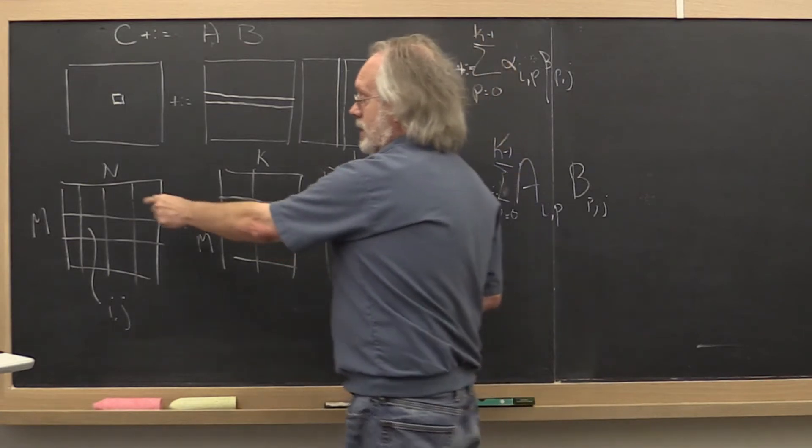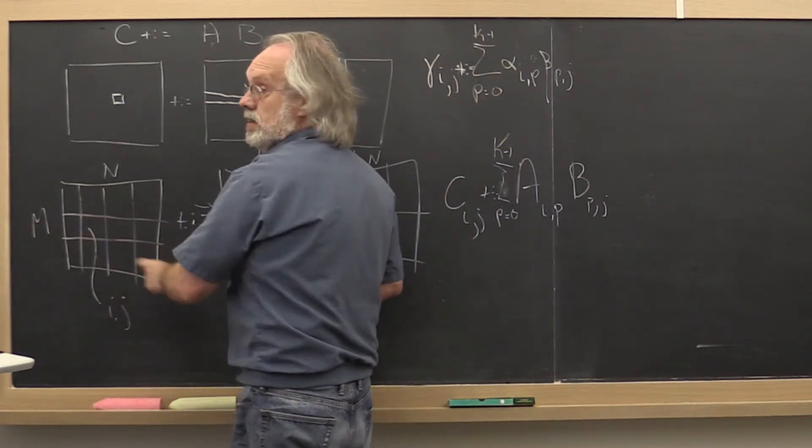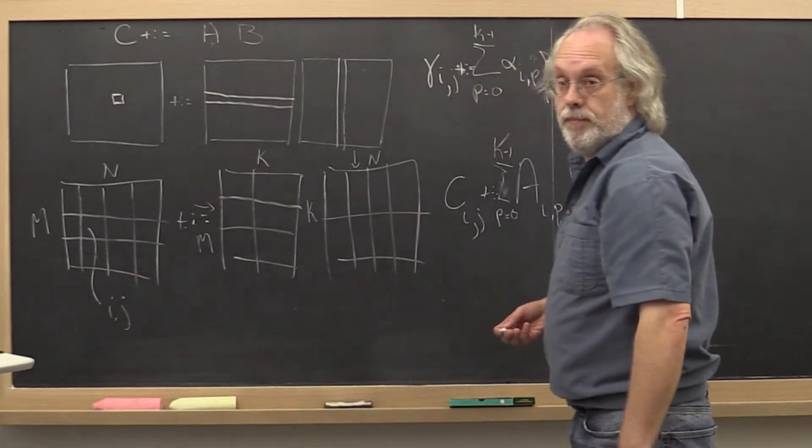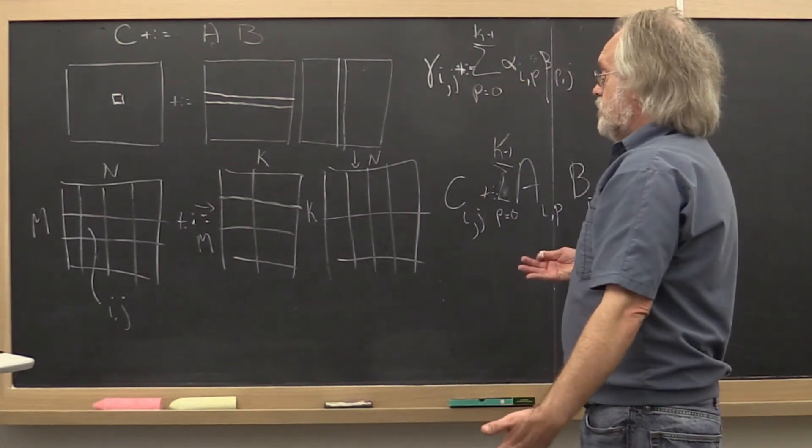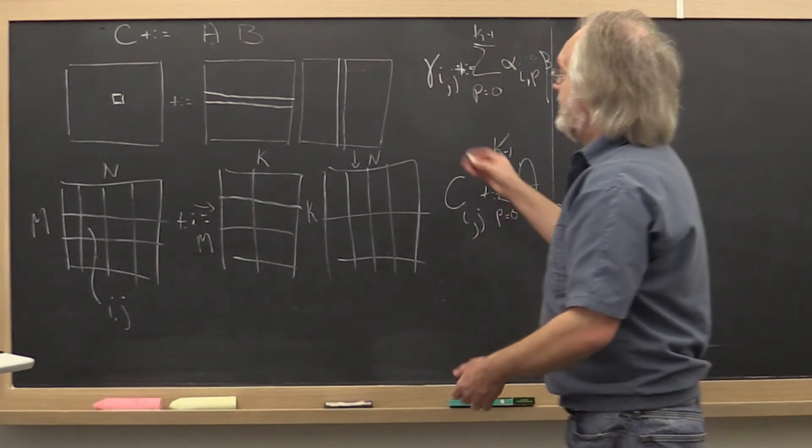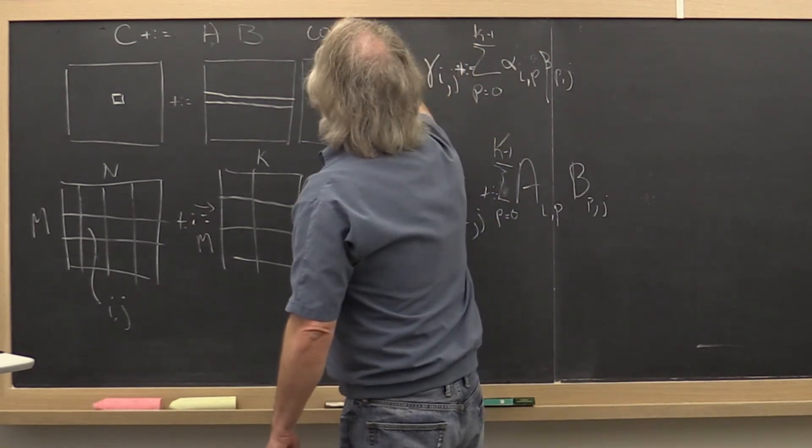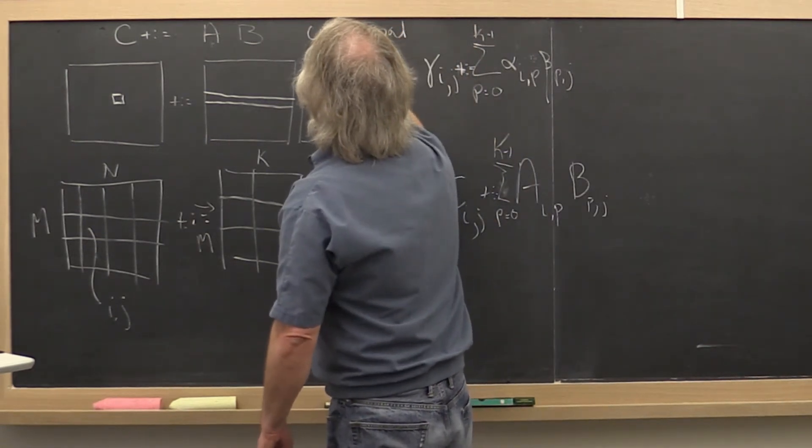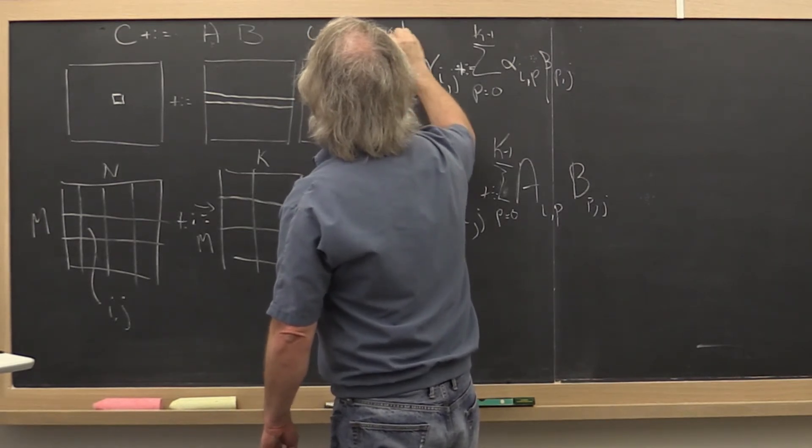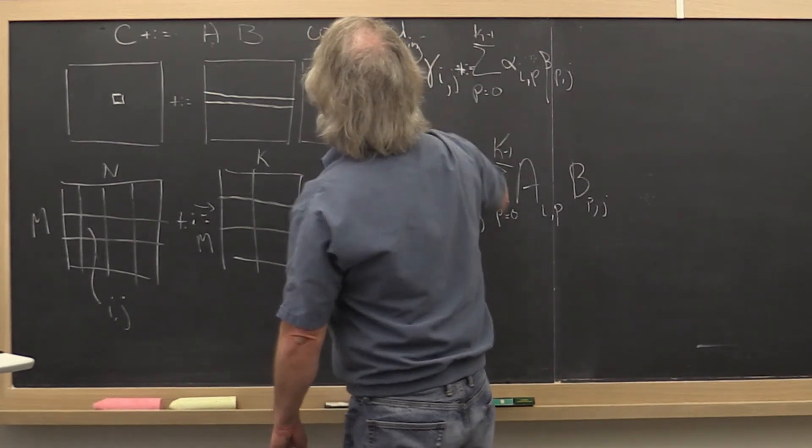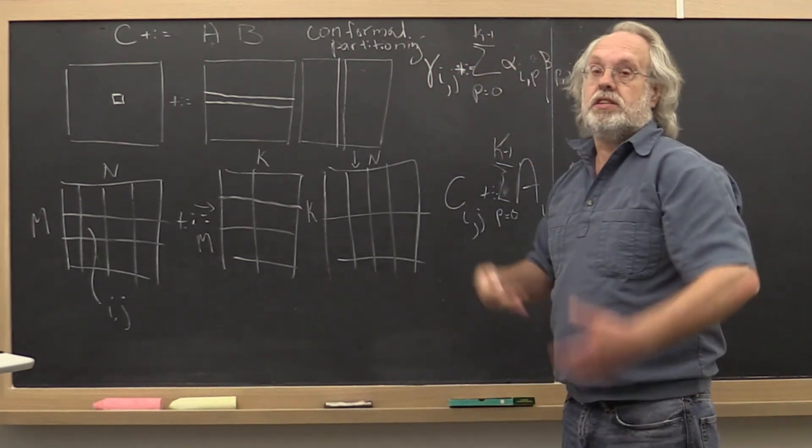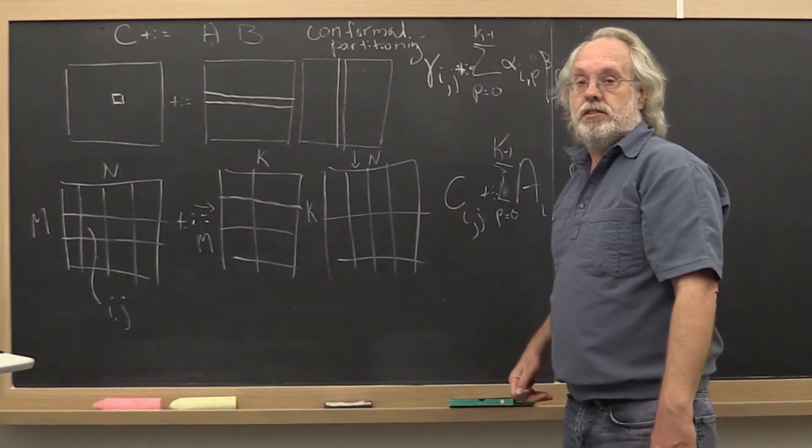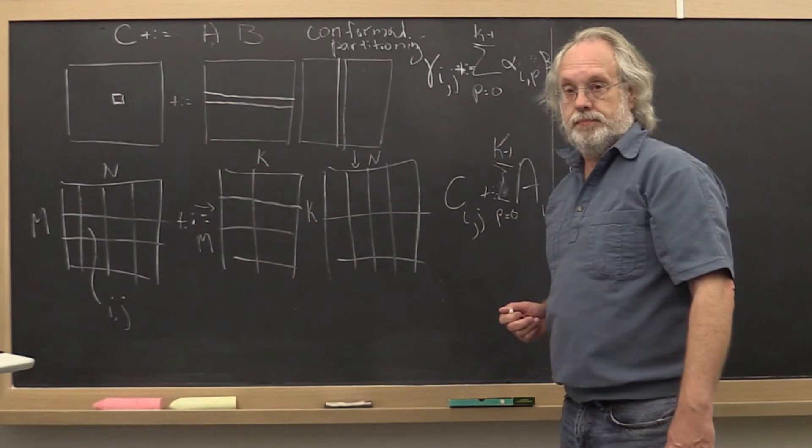And then the same thing is true for the sub-matrix C that result. So we call that a conformal partitioning. And what does conformal mean? It means all the sizes work out.